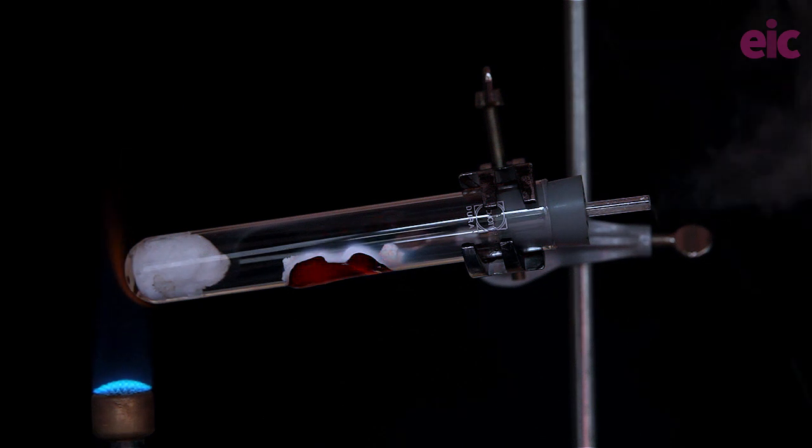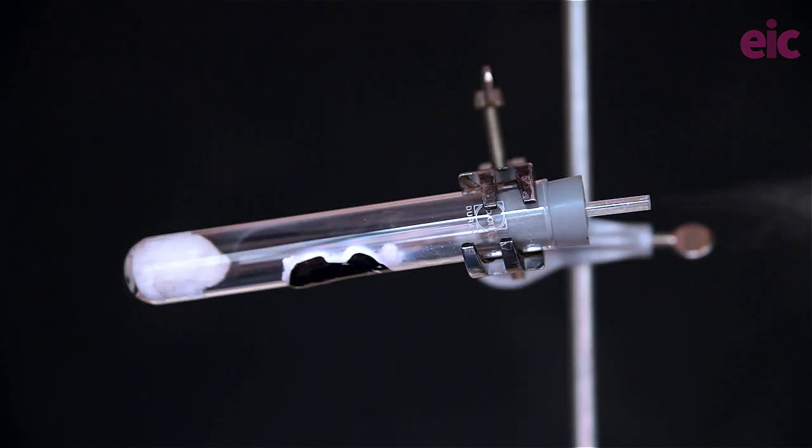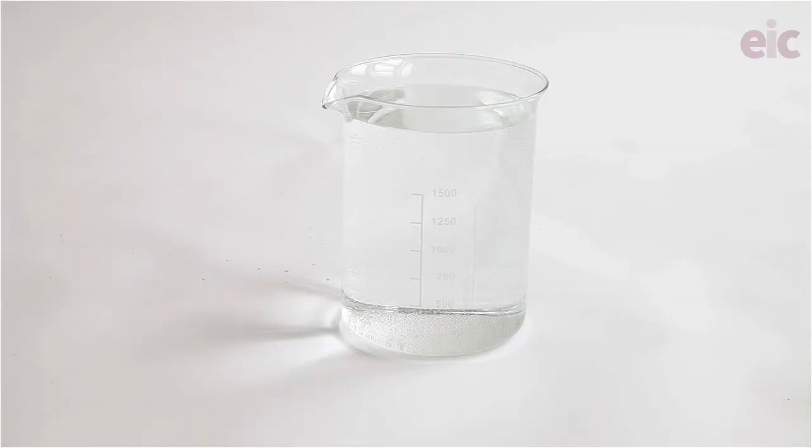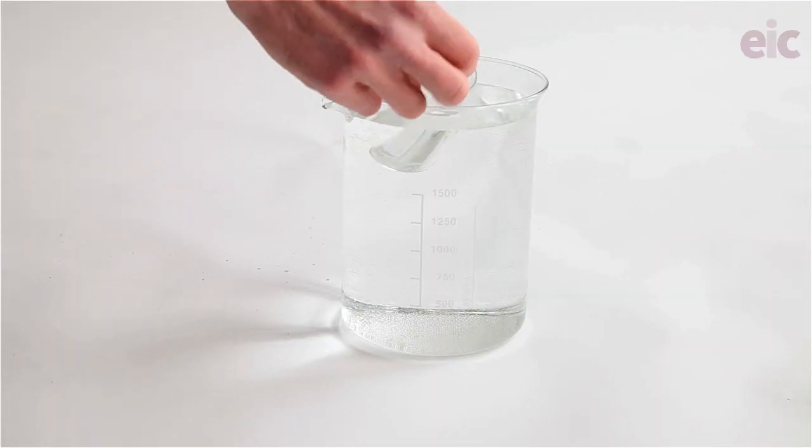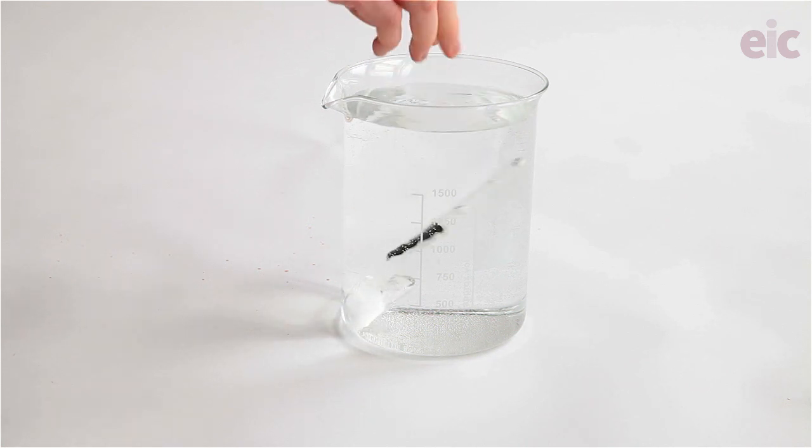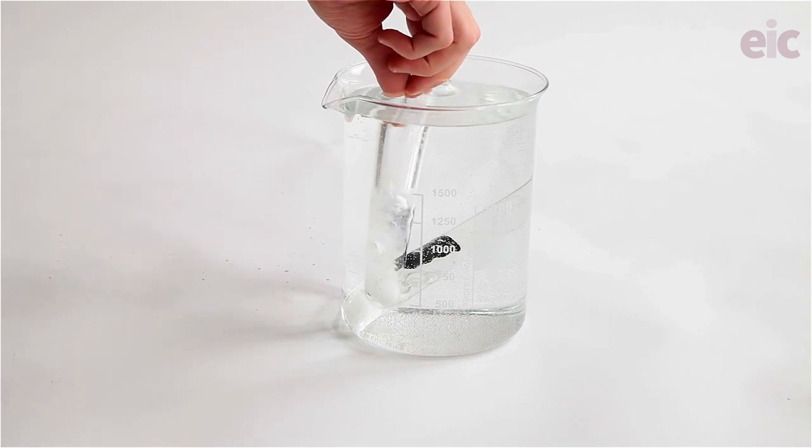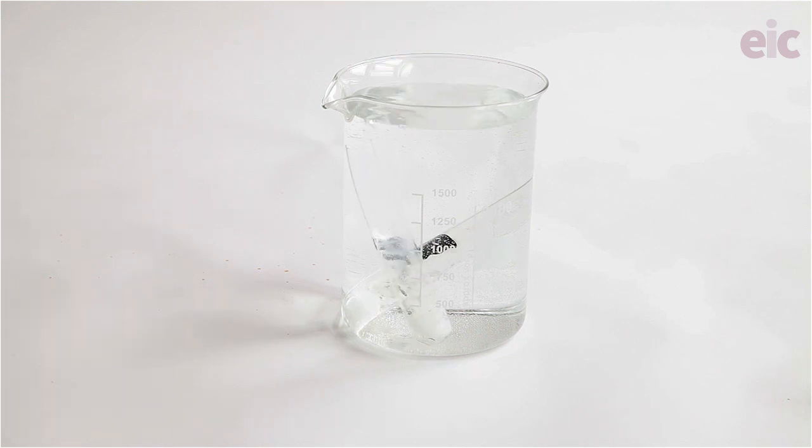Sometimes once you finish the experiment you'll notice the borosilicate tube will crack. Even if it doesn't the glass will still be severely weakened and should not be reused. Rather than reusing it, rinse in at least 500 cm cubed of water. You might get a few bubbles or even a pop as magnesium silicide reacts to produce pyrophoric silanes and then you can then dispose of this in your regular glass disposal.